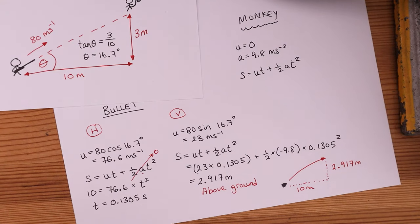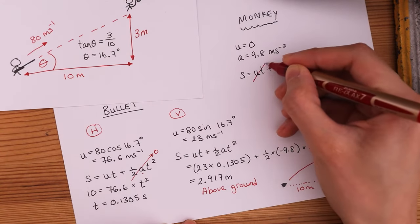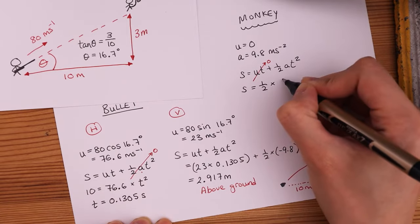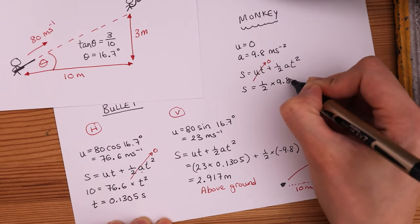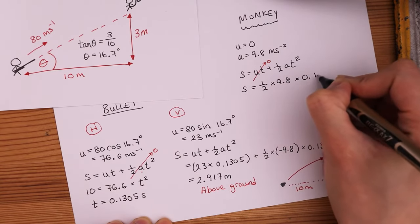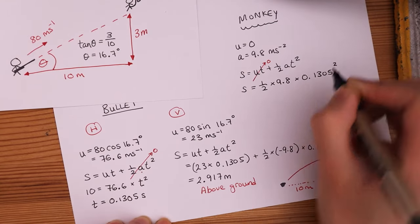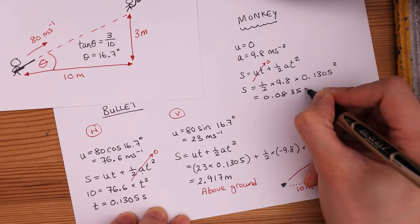Initial velocity is zero, so this cancels out. That leaves us displacement is equal to half times 9.8 times 0.1305 squared. That becomes 0.0835 meters. And that's the distance from the top of the tree.